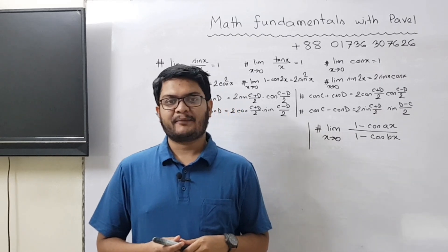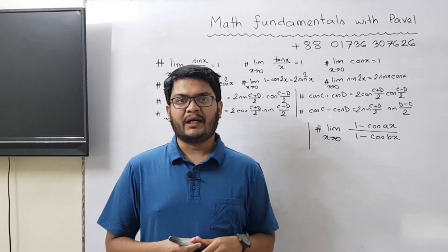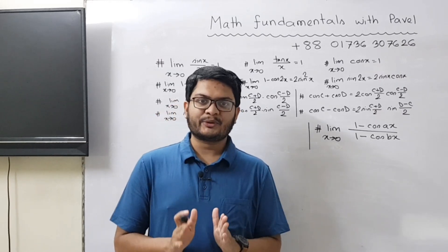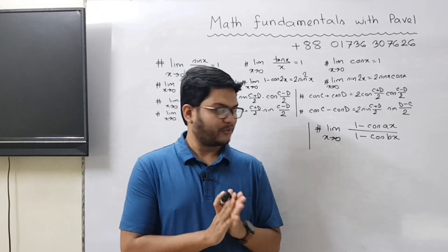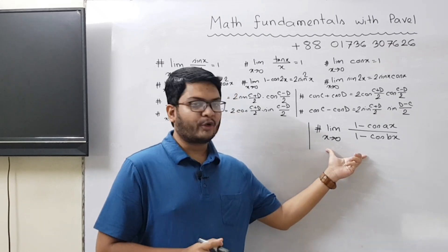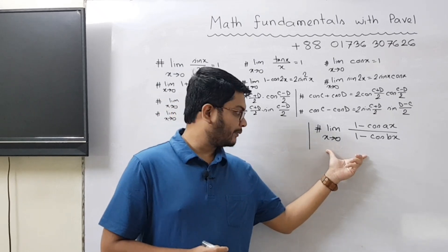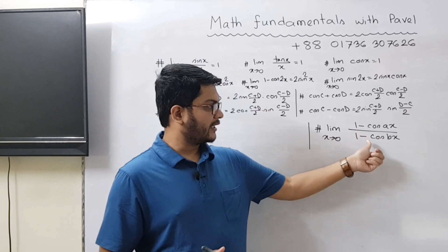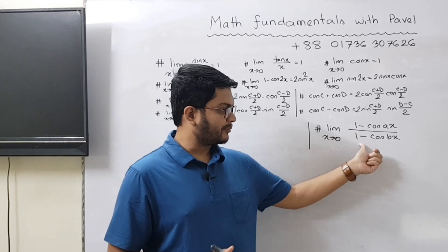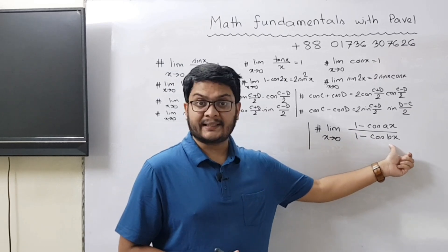Assalamualaikum, I am Pavell. Today we will solve the first problem. You can see the first question: limit x to 0 of (1 - cos ax) divided by (1 - cos bx).